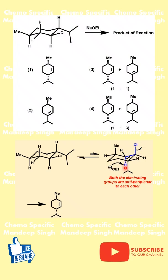In this case, the chloro and the hydrogen must be anti-periplanar to each other. However, if we look at the compound, the chloro, isopropyl group, and methyl are at the equatorial position, which is the stable conformer.